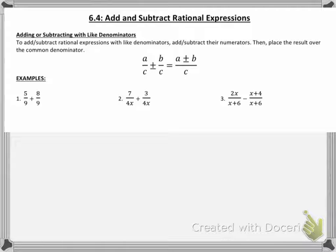In order to add and subtract rational expressions, you take whatever is in your numerators, you add or subtract those together, and you place that over top the common denominator. So let's take a look at a couple of really basic examples where the denominators are already in common.